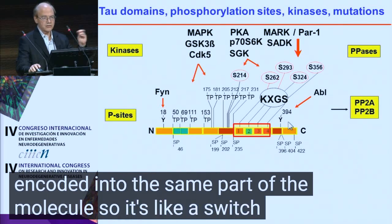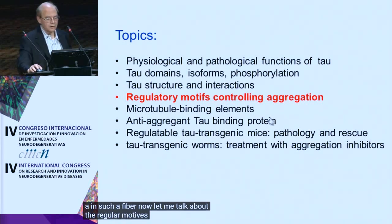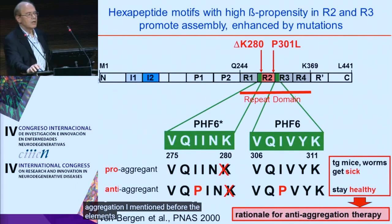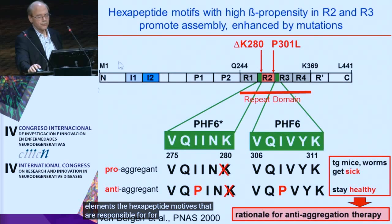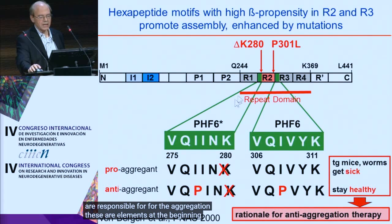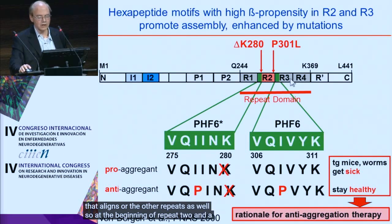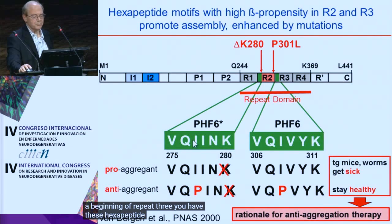So it's like a switch — either pathological or physiological. The regular motifs for controlling aggregation are the hexapeptide motifs that are responsible for the aggregation. These are elements at the beginning of repeat R2 and repeat R3. At the beginning of repeat two and repeat three, you have these hexapeptide motifs: VQIRNK or VQIVYK.